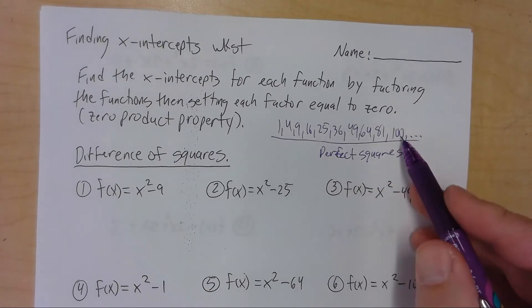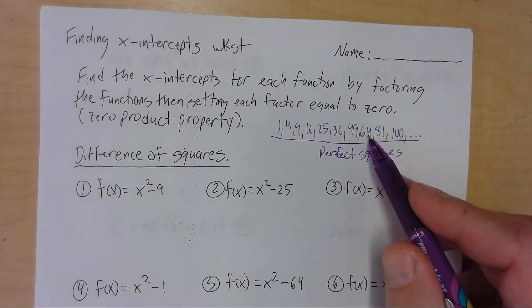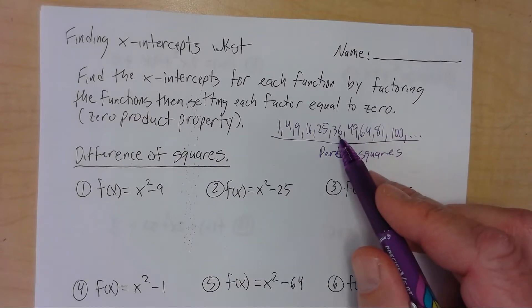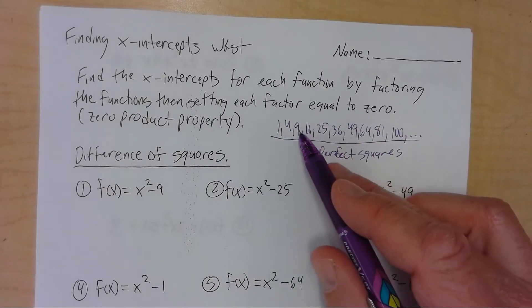So that's 10 times 10, 9 times 9, 8 times 8, 7 times 7, 6 times 6, 5 times 5, 4 times 4, 3, 2, 1, etc.